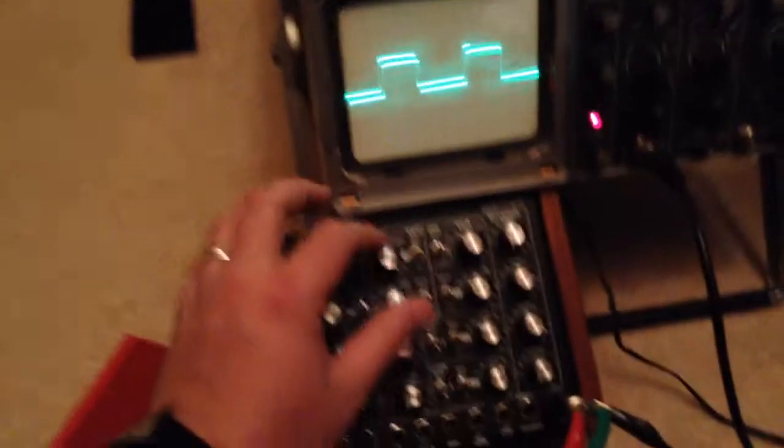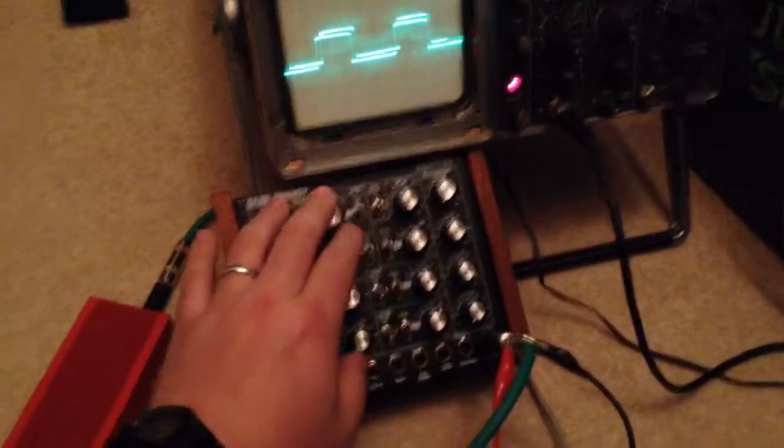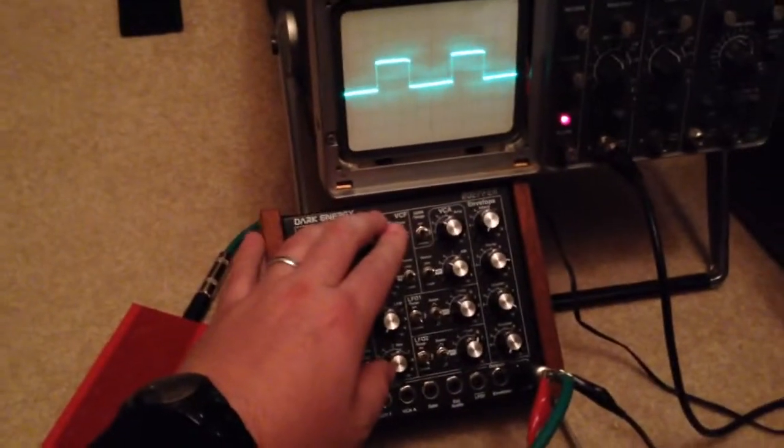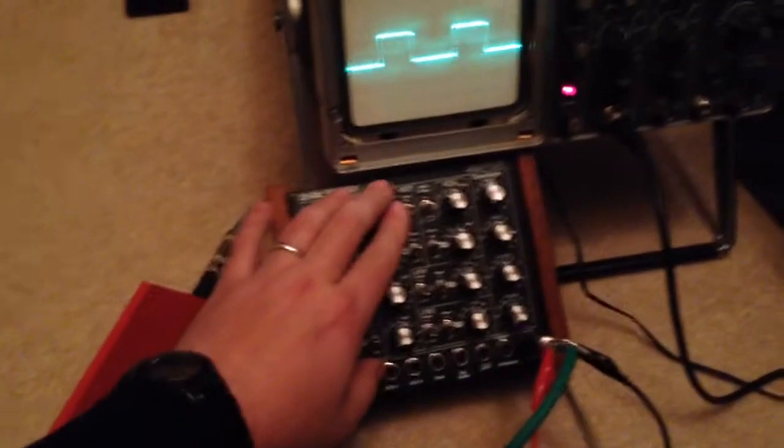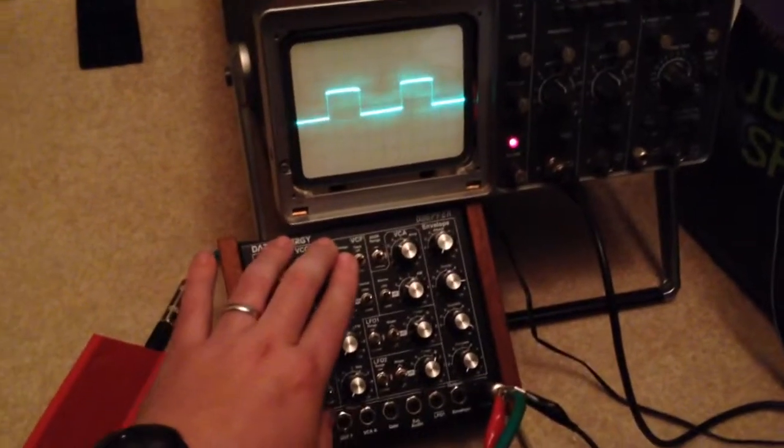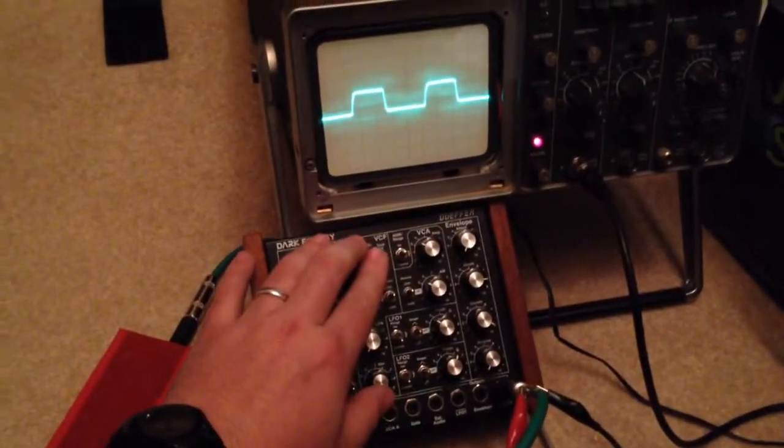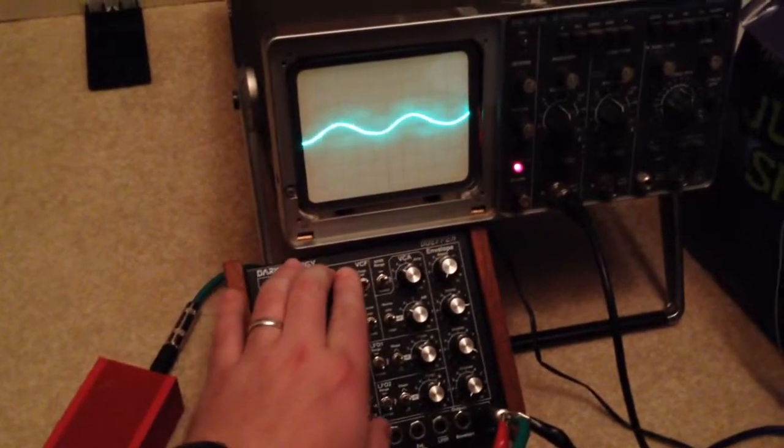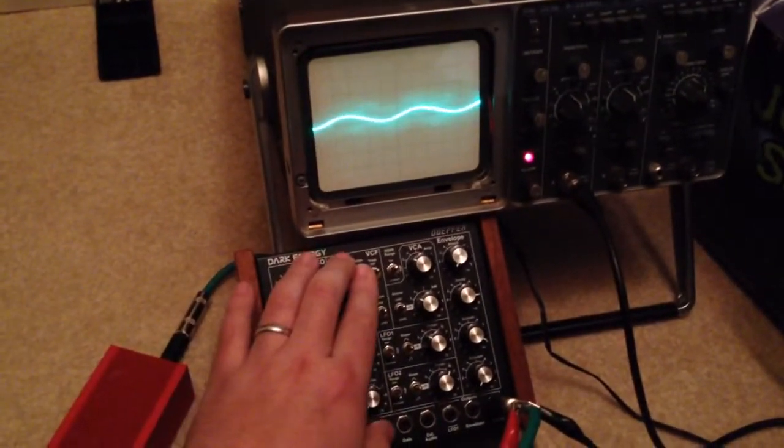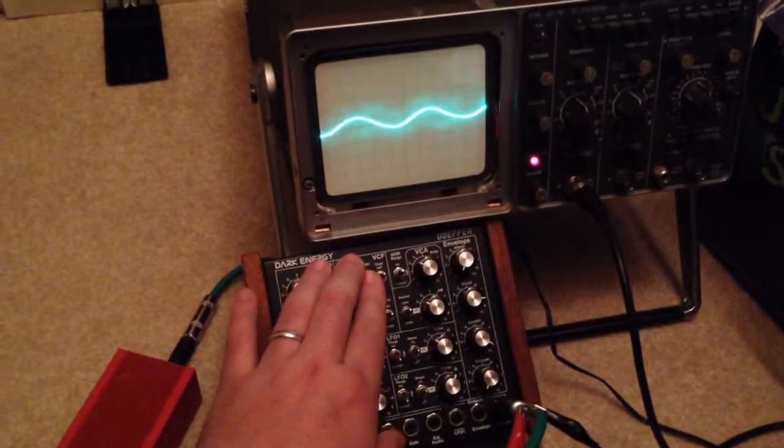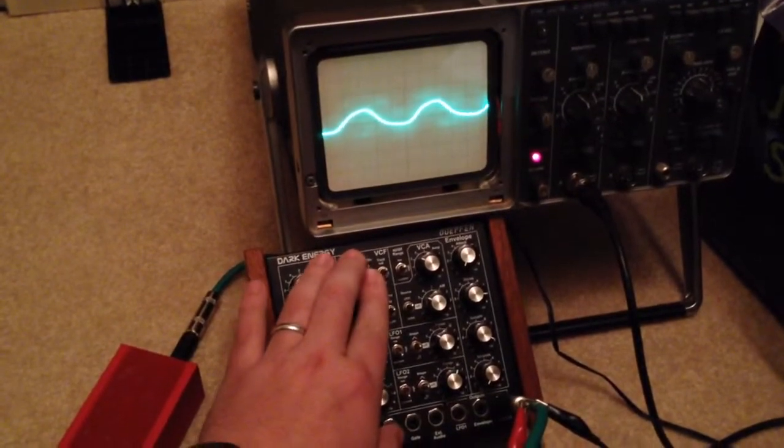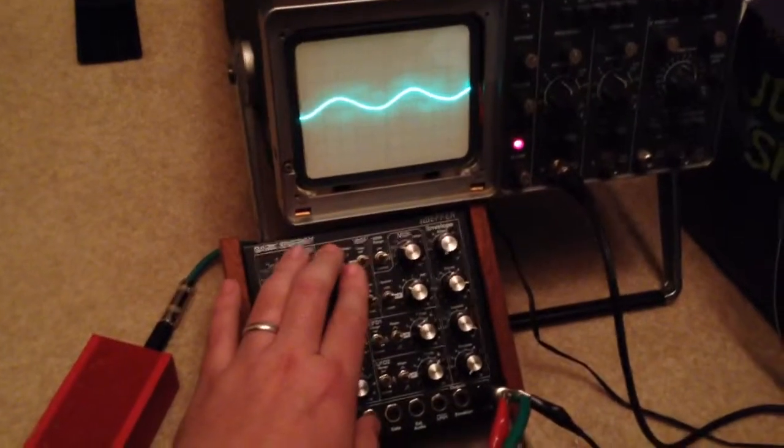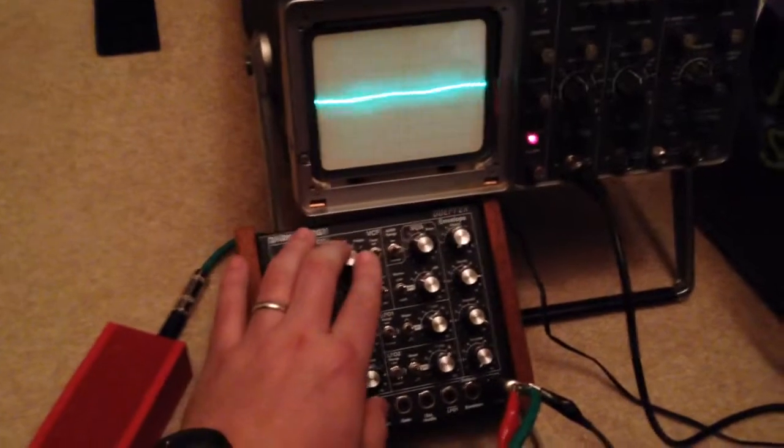The last cool thing to look at when looking at a synthesizer in an oscilloscope is obviously its filters. So, this has a low pass filter on it. Like I said, this is the first generation Dark Energy. I'm just going to low pass it. This is with no resonance. You can see we're going to get a nice sine wave there where it completely cuts out.